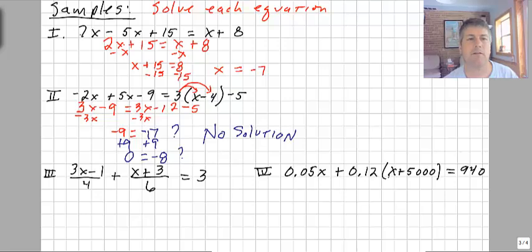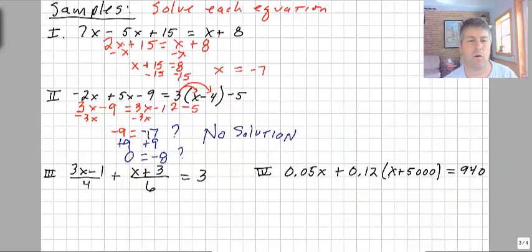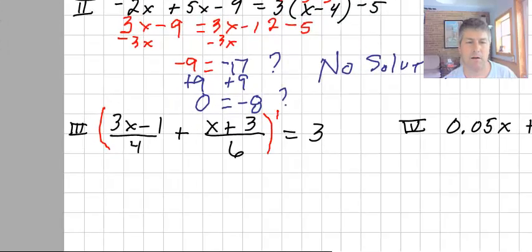Moving on to sample problem 3. Now we have fractions: 3x minus 1 over 4 plus x plus 3 over 6 equals 3. Back in our previous instructions, we were told to clear fractions. We want to multiply each side of the equation by the common denominator. What's our common denominator between 4 and 6? Hopefully you see that our common denominator is 12.